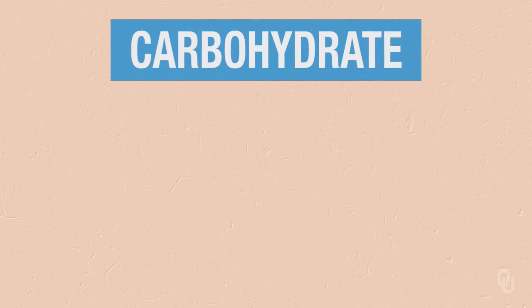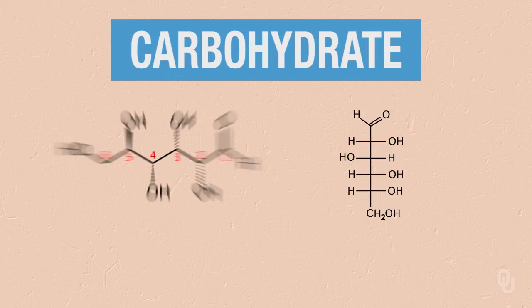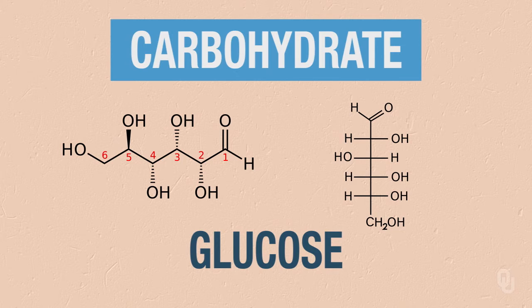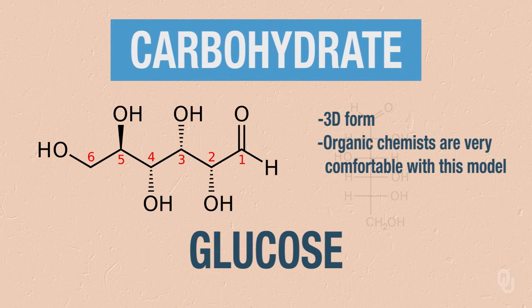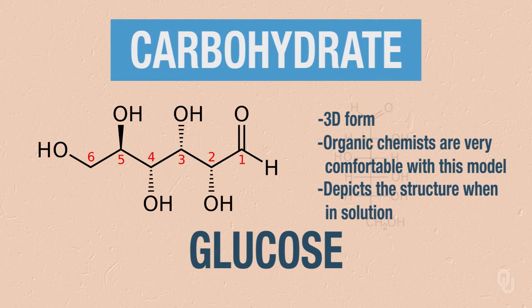Most of our sugars are going to be C6H12O6. Now let's look at the structure of our simple carbohydrates. If we look at our carbohydrate, such as glucose, which is going to be our main carbohydrate, it's usually shown in a few different forms. The first structure we see here is actually in a three-dimensional form that organic chemists are very comfortable with because it gives accurately what the structure will look like, energetically, in solution.